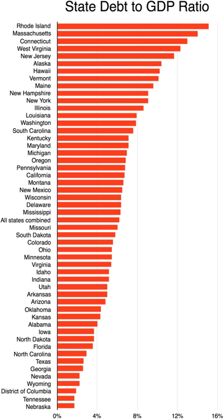Three were set off from an already existing state: Kentucky from Virginia, Maine from Massachusetts, and West Virginia from Virginia. Two were sovereign states at the time of their admission: Texas, previously the Republic of Texas, and Vermont, previously the Vermont Republic de facto. One was established from unorganized territory — California, from land ceded to the United States by Mexico in 1848 under the terms of the Treaty of Guadalupe-Hidalgo.